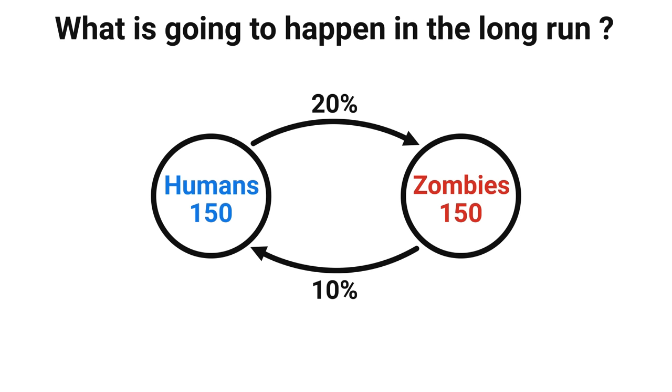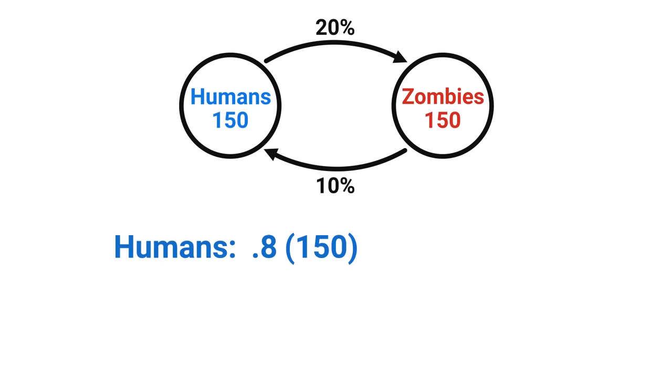Now we're going to assume the changes happen in discrete intervals at the hour. So let's see what happens in the first hour. For the humans of the 150 starting out, 80% of them are going to stay human or not become infected. But we also have to add the 10% of the 150 zombies that become cured and turn back to human. This leaves us with 135 humans after that first hour. It went down just a bit.